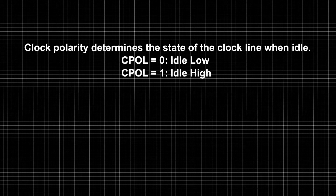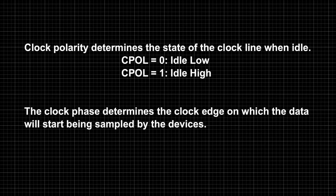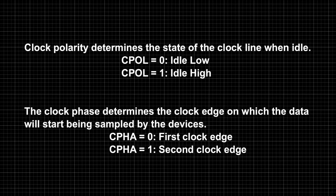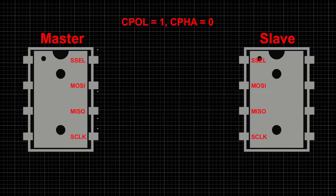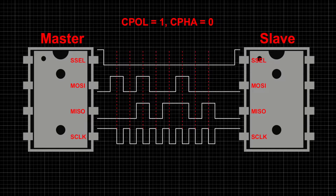Clock polarity determines the state of the clock line when idle — it can either idle low or high, defined as 0 or 1. Clock phase determines the clock edge on which data will start being sampled, either the first or second clock edge, defined as 0 or 1. The two parameters combined create four variations. When both clock phase and polarity are zero, the bits start being sampled on the first clock transition from low to high, so bits are sampled on rising edges.